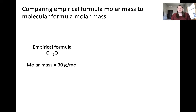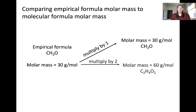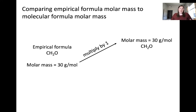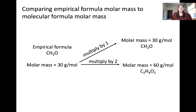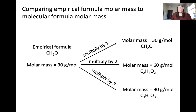An important consideration when thinking about the relationship between the empirical and molecular formula is to consider their molar masses. You should be able to calculate the molar mass of CH2O as 30 grams per mole. The molar mass of CH2O, multiplying the empirical formula by 1, is 30 grams per mole. Multiplying the molar mass of the empirical formula by 2 gives us C2H4O2 at 60 grams per mole. And lastly, multiplying the molar mass by 3 gives us the corresponding molar mass of C3H6O3, which is 90 grams per mole.